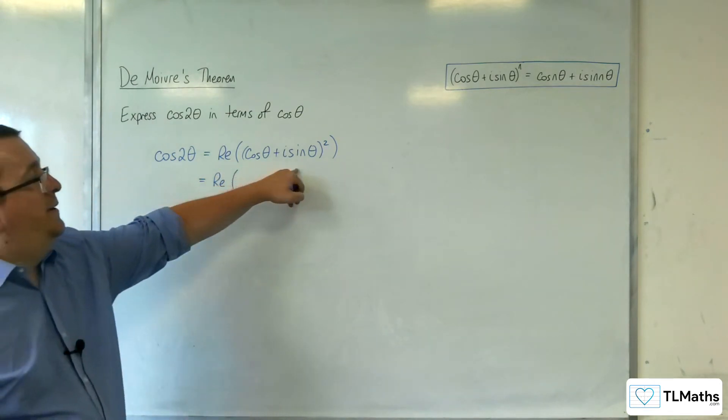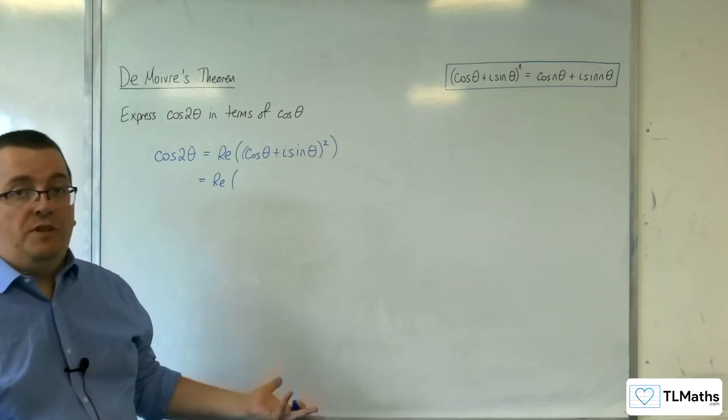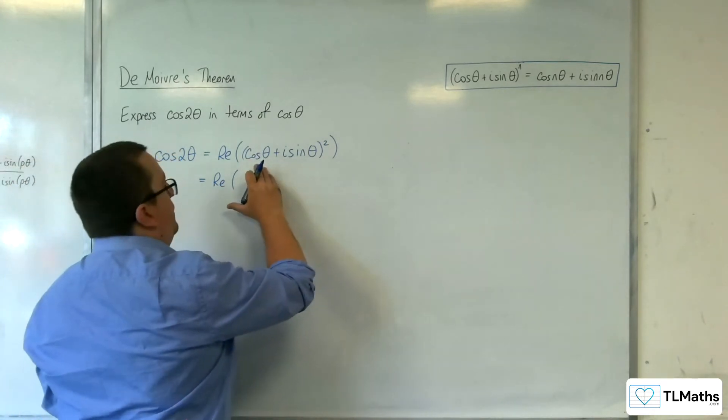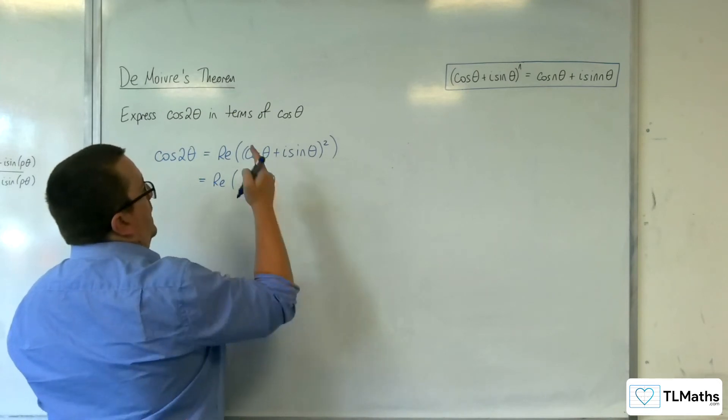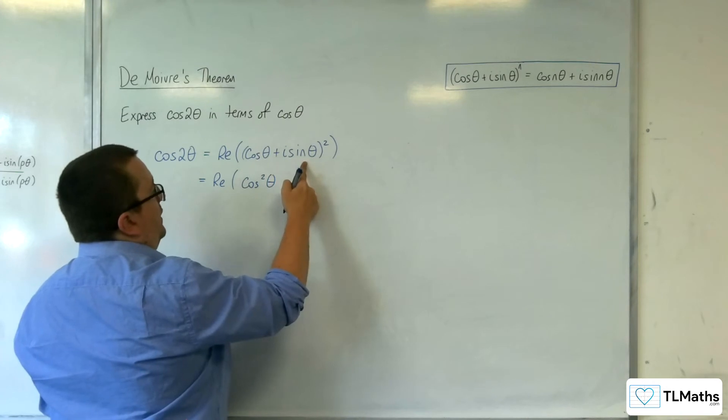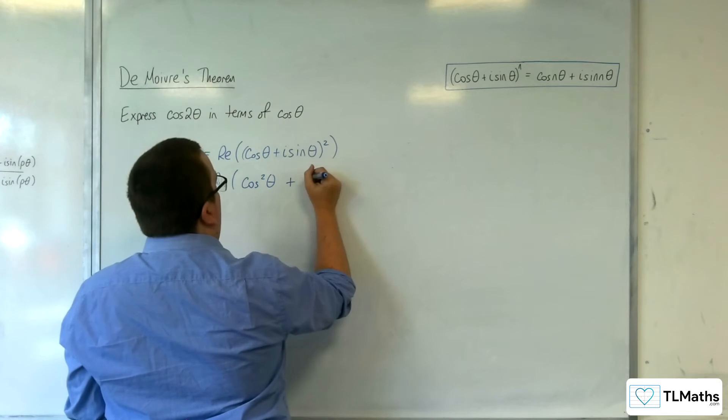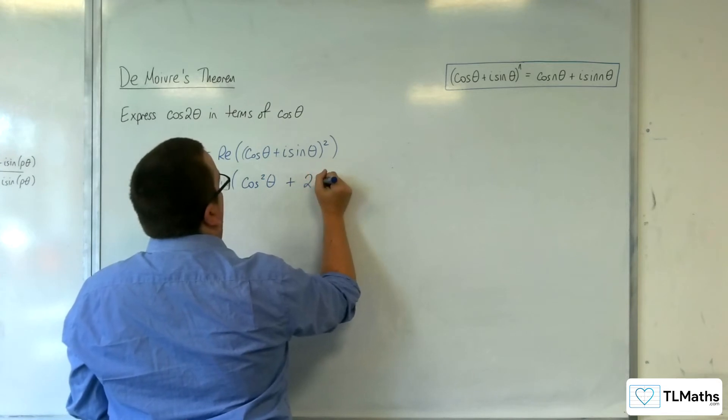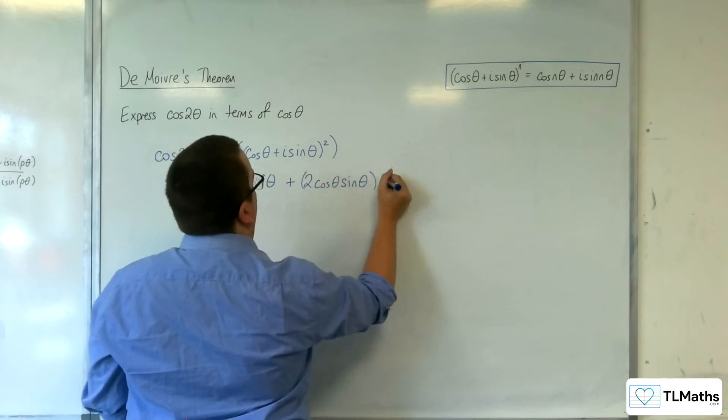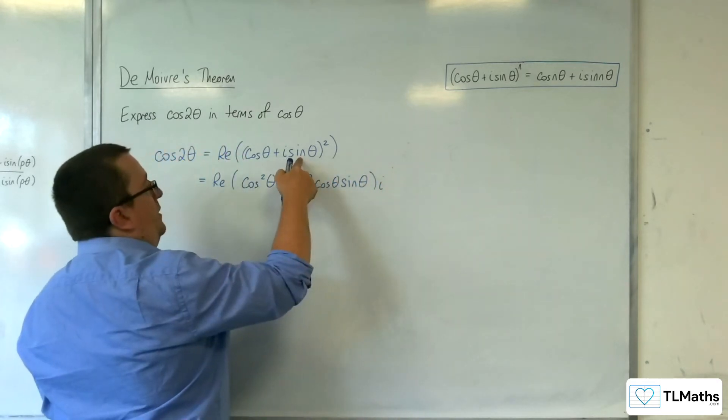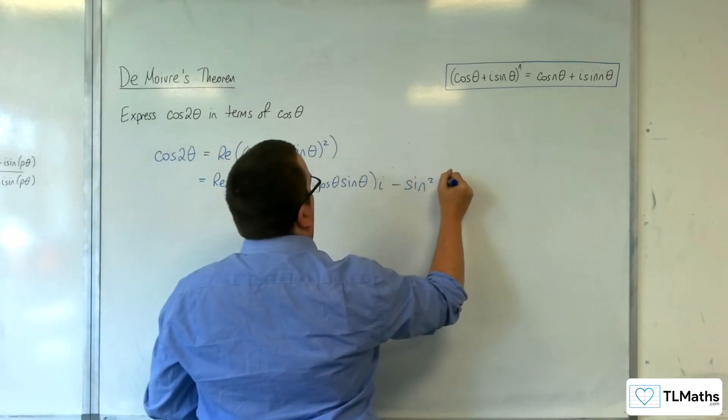So I'm going to want to expand this out using binomial expansion, or I could just do double bracket expansion. So I get cosine theta times cosine theta, so cosine squared theta. I get cosine theta times i sine theta twice, so plus 2 cosine theta sine theta i. And I get i sine theta times i sine theta, which is minus sine squared theta.